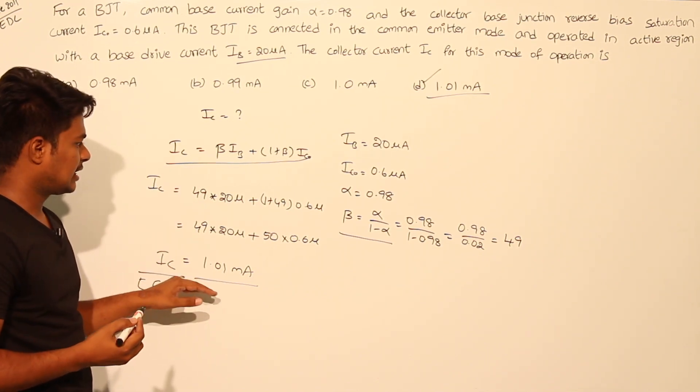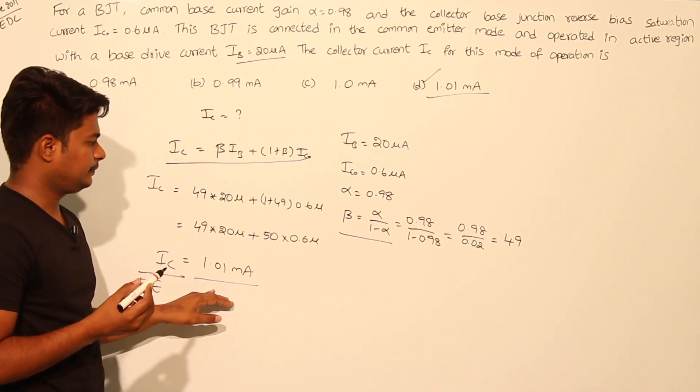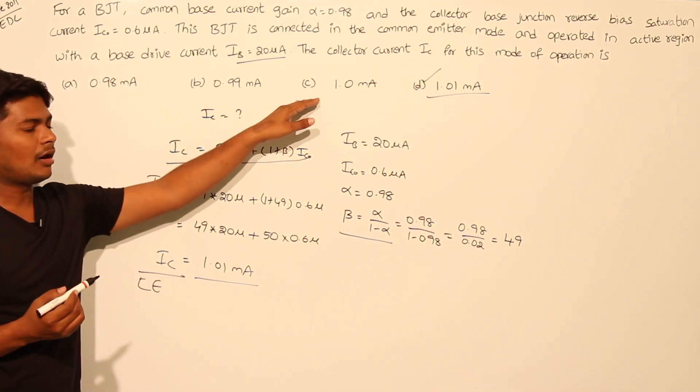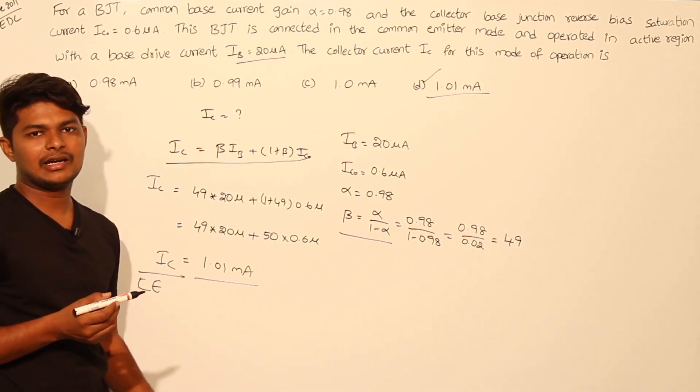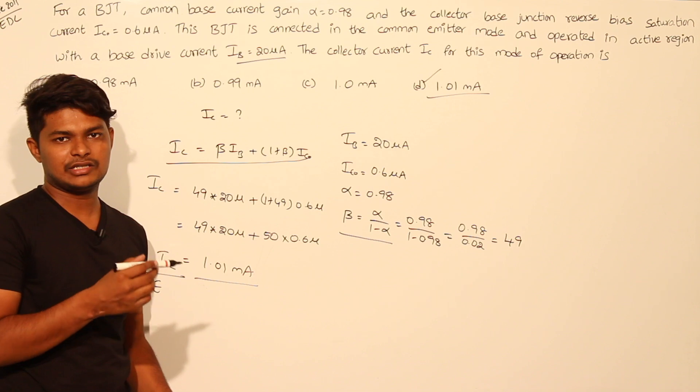One more thing: if you see the options, all options are very nearest to each other, so you need to exactly calculate with the scientific calculator given in the system, then you will find this option.